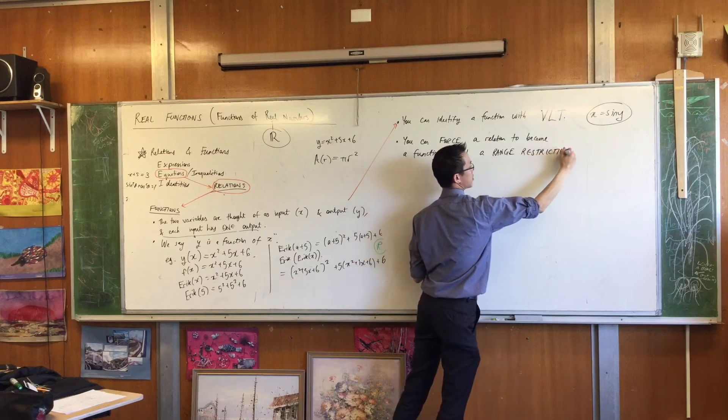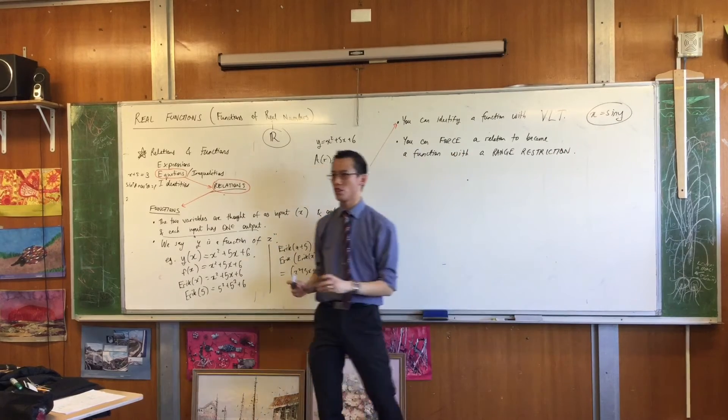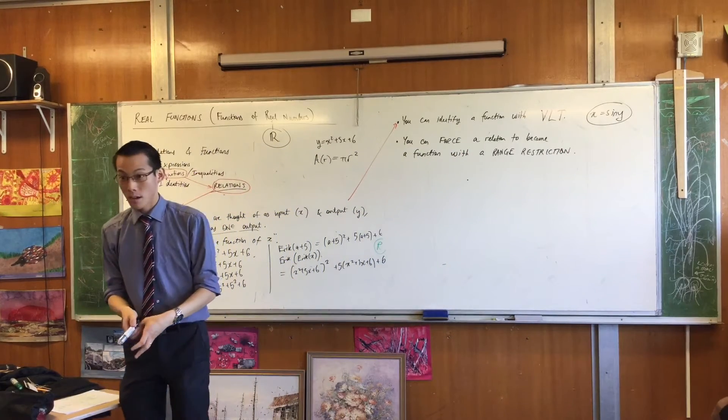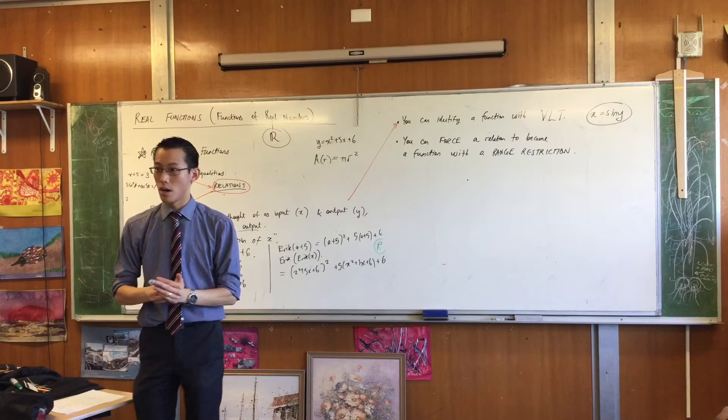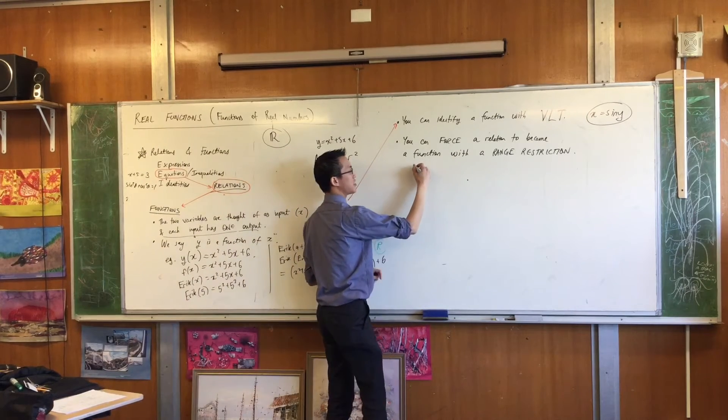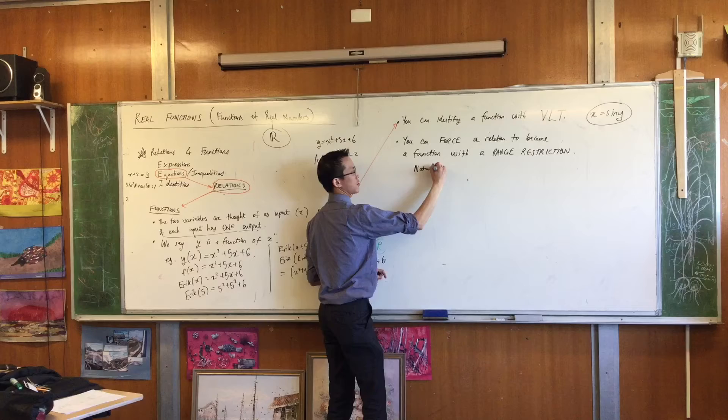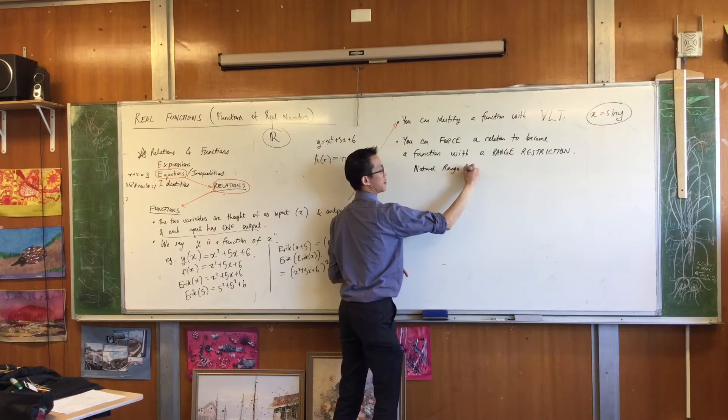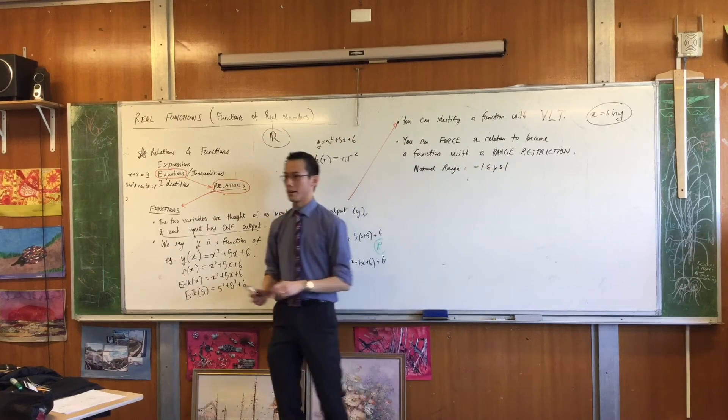I want you to look at that unit circle. I want you to look at the unit circle. What was its range again? Negative one to one, right? We actually say the natural range would be negative one to one. Okay?